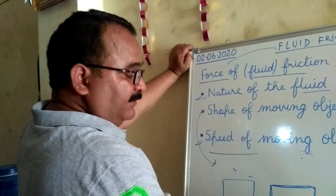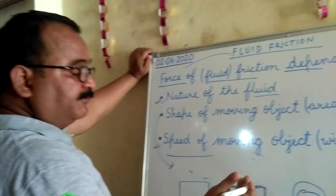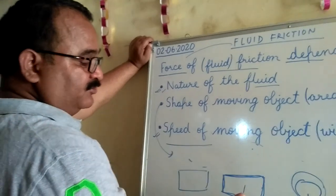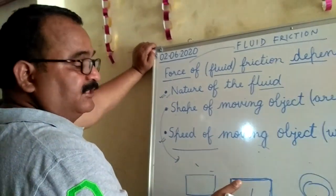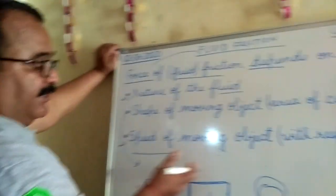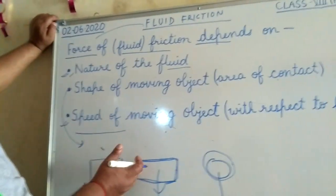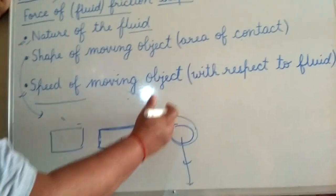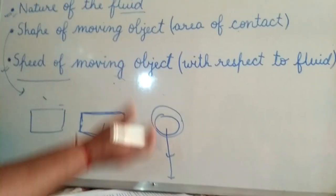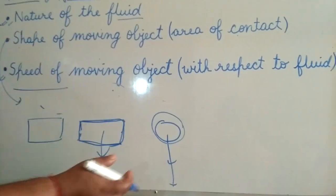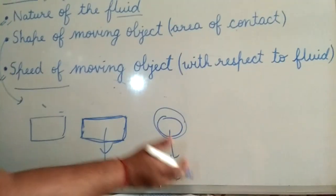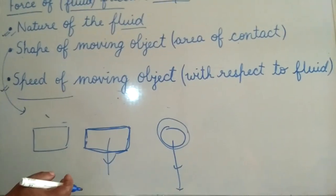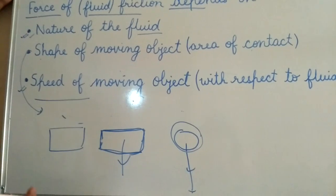The air exerts a lot of force against the motion of the flat paper — this is air pressure, meaning fluid friction. Where the area is more, the fluid friction is more. Where the area is less, the fluid friction is also less, so the round ball comes toward the earth much more quickly.